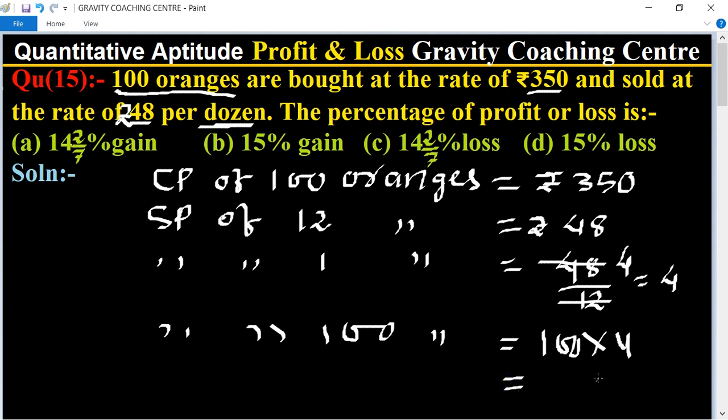So the SP of 100 oranges equals 100 multiplied by 4, which equals 400 rupees.